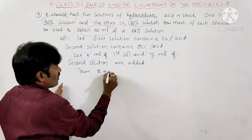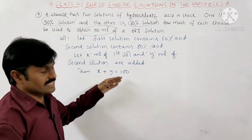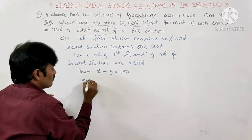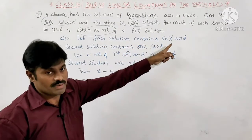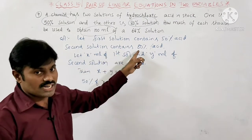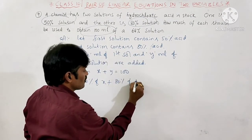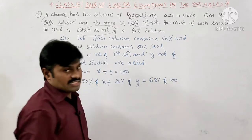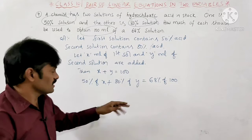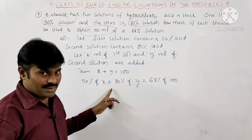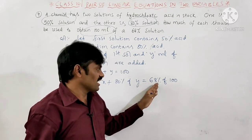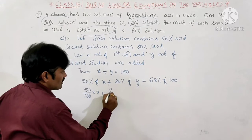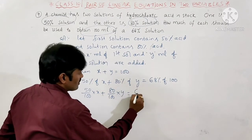Since we want 100 ml of liquid total, we can write X plus Y is equal to 100 ml. According to the mixing of acid percentages, 50% of X plus 80% of Y is equal to 68% of 100 ml. Converting: 50 by 100 into X plus 80 by 100 into Y is equal to 68 by 100 into 100.